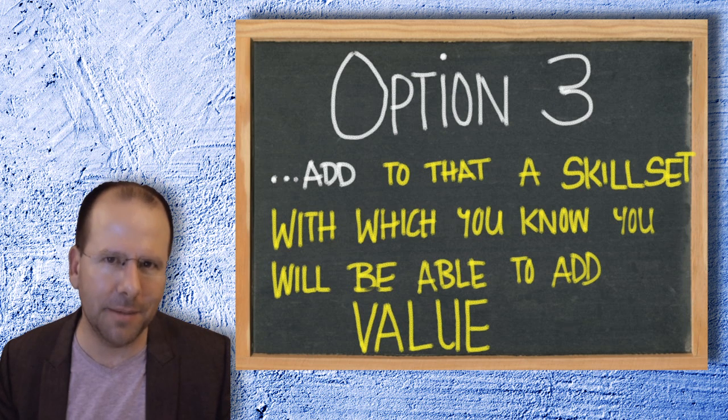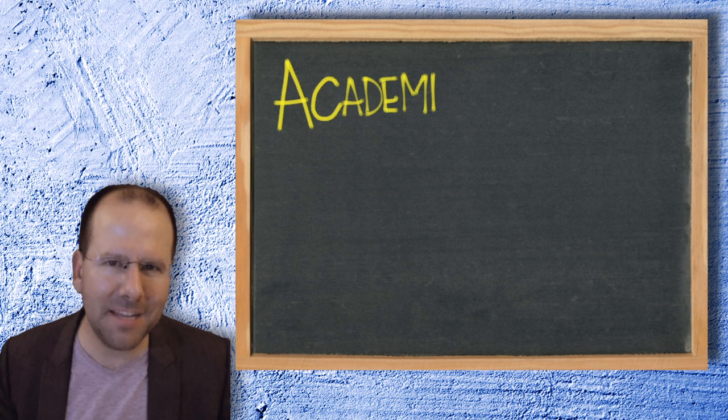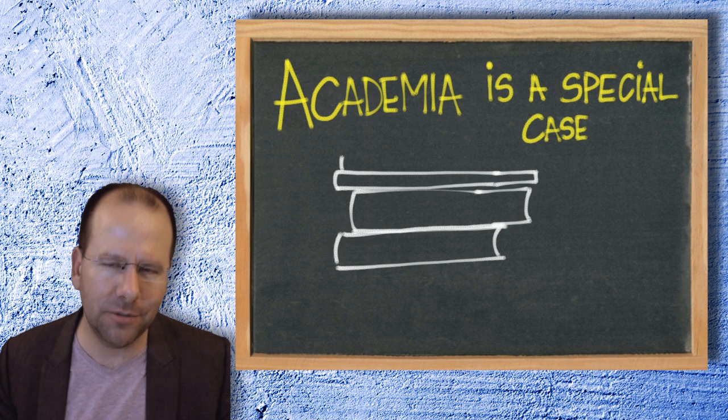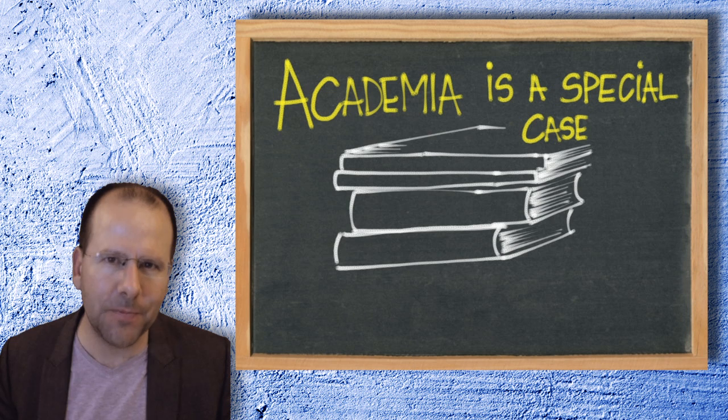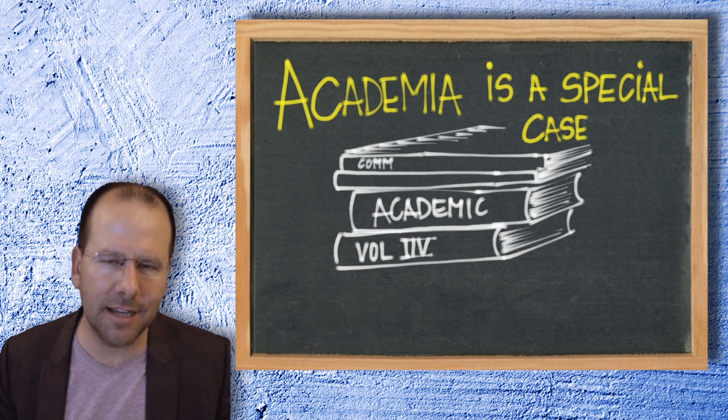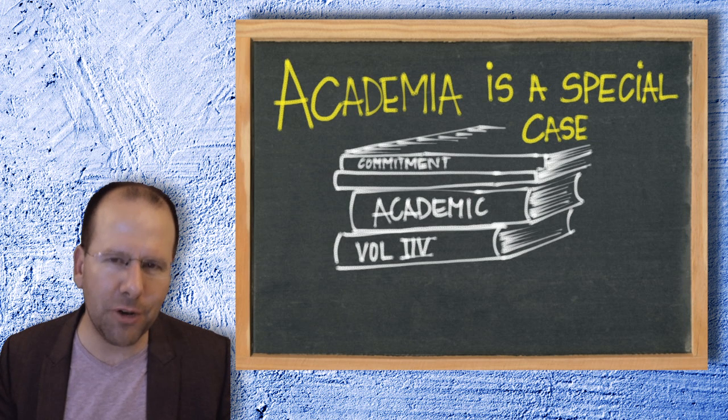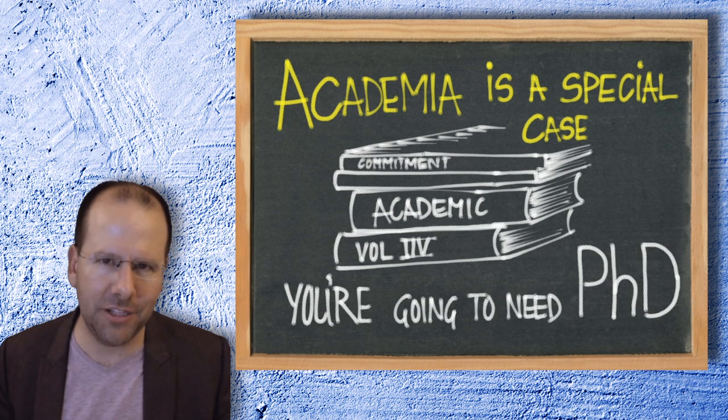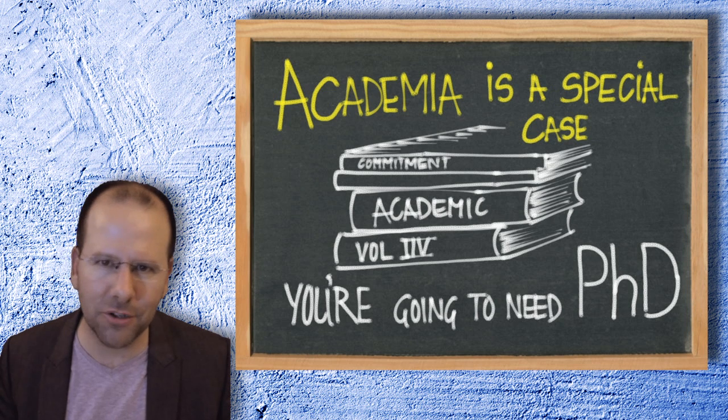Academia is a little bit of a special case. So if you want to be an academic, you're really going to need to hunker down and have detailed specific knowledge in a particular area. If you're going to be an academic, you're going to need to do a PhD. You can sometimes get away without a PhD in academia, maybe if you're a medical doctor, but by and large you need to do a PhD, and it's a big commitment. So think about it carefully.